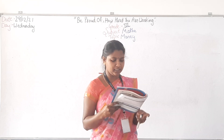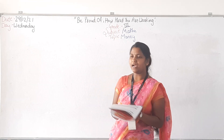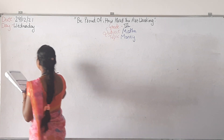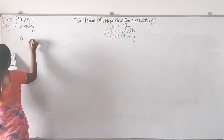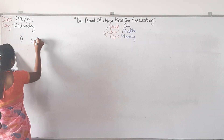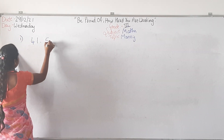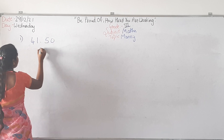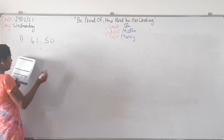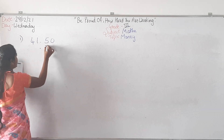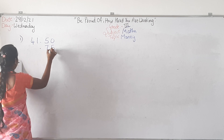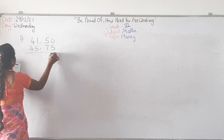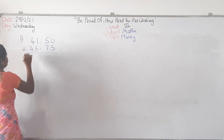First, we will learn how to add money. The question is 41.50. Under this, you have to put the point, then you have to write the number. Addition.